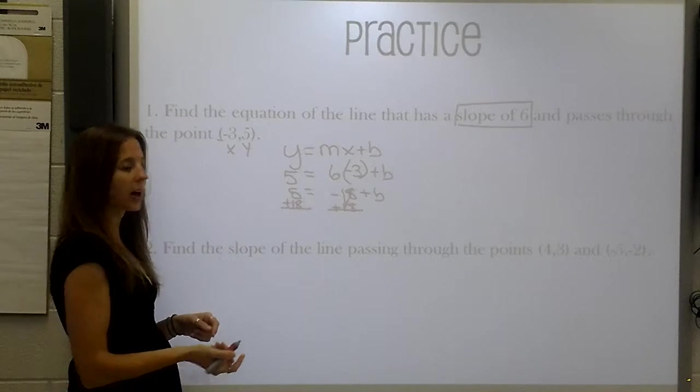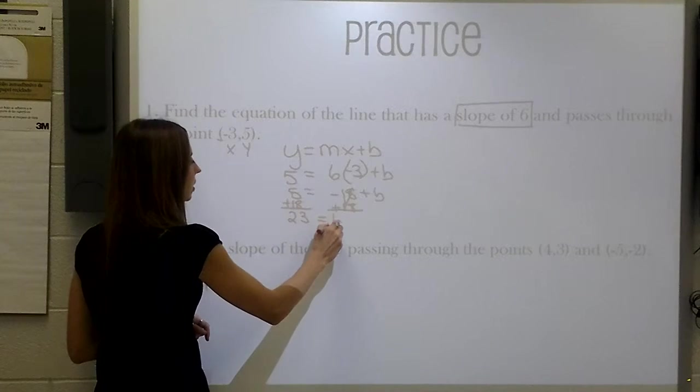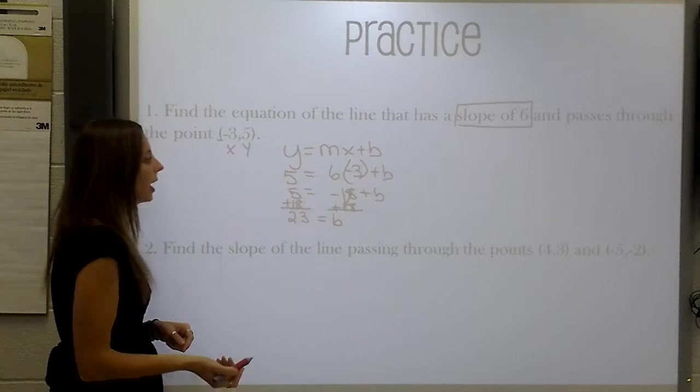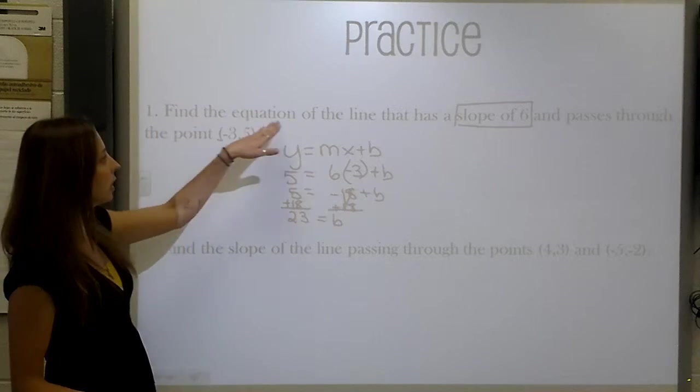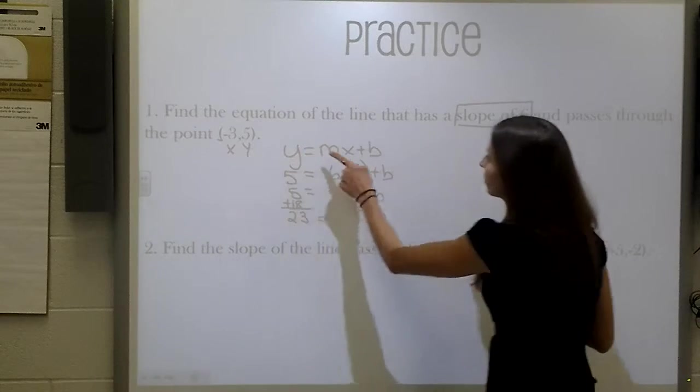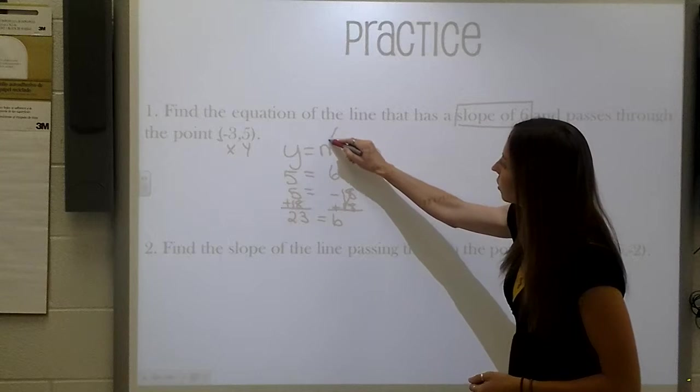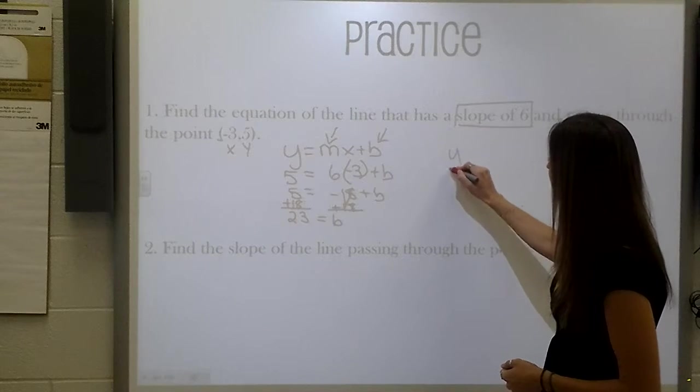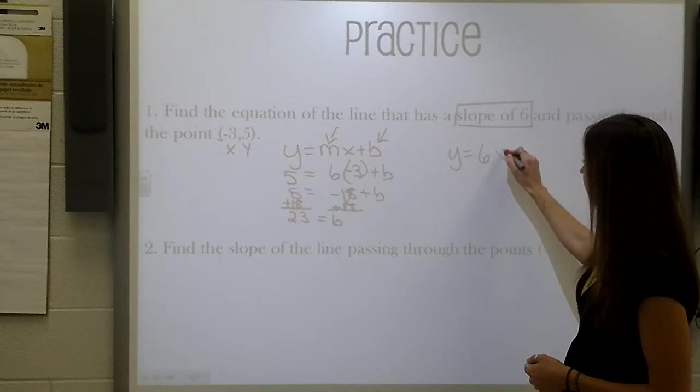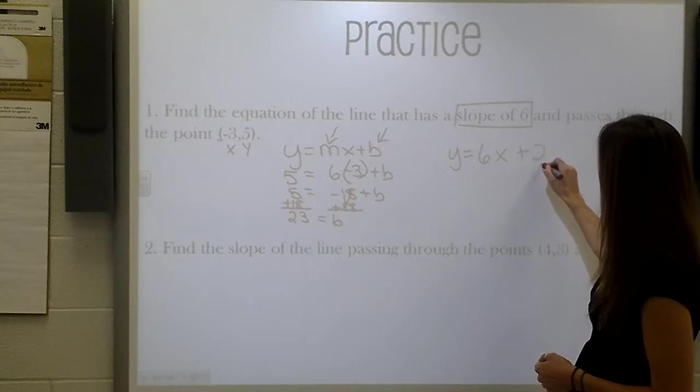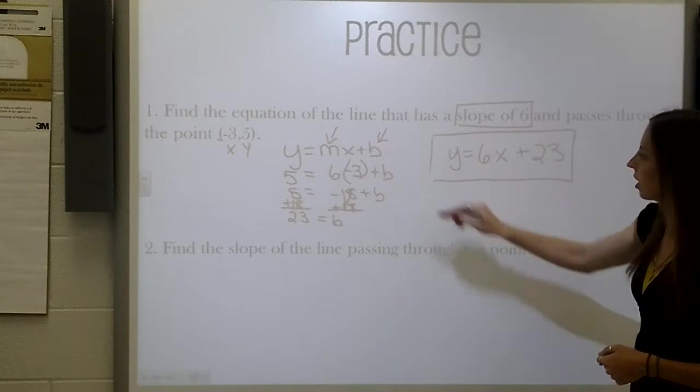And 18 plus 5, we know, is 23. So our y-intercept, we now know, is 23. If we were to find the equation, we're just going to rewrite this and now plug in for our slope and our y-intercept. So y equals 6x plus 23. And that would be the equation of a line.